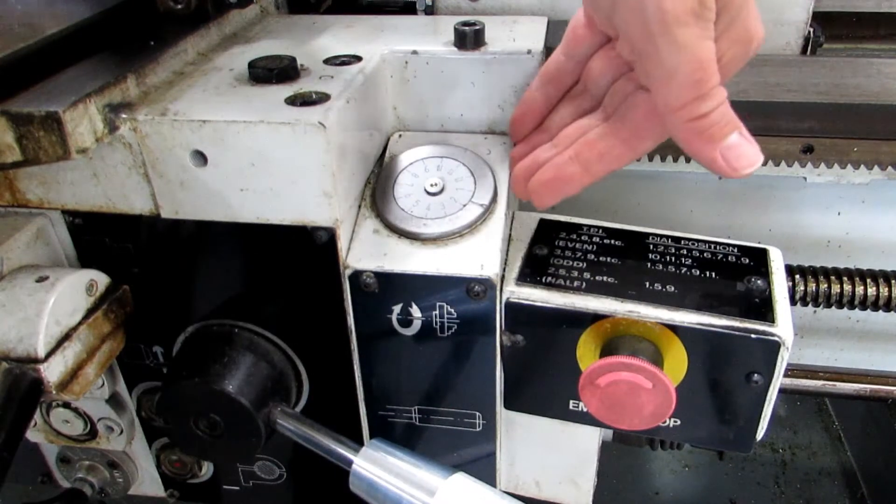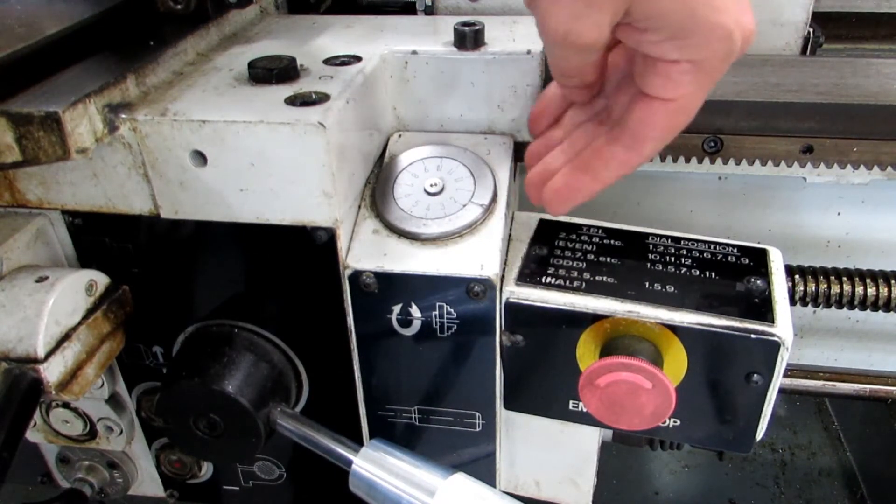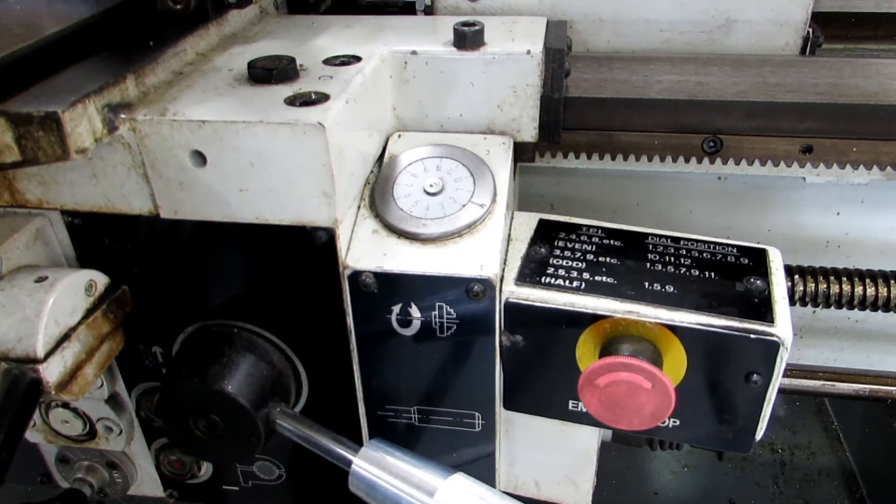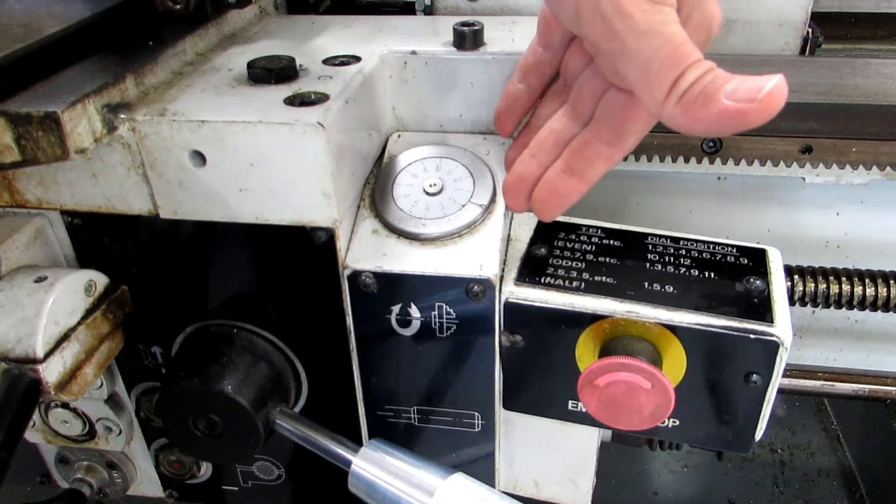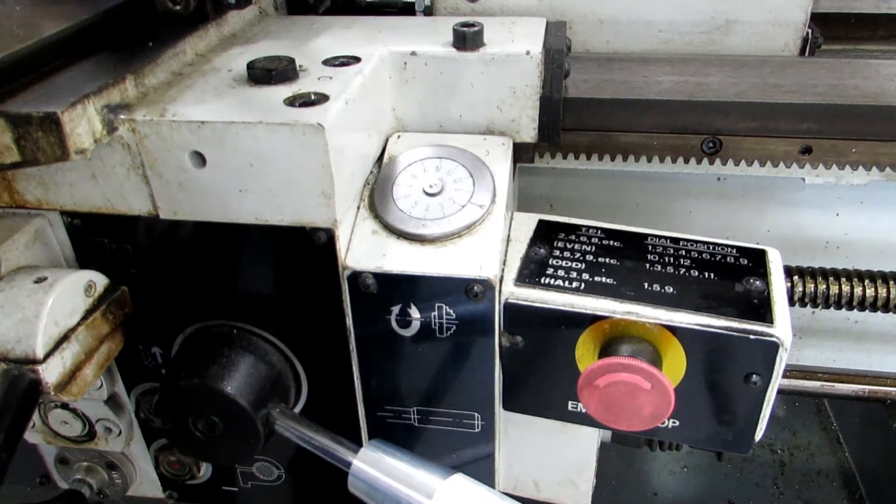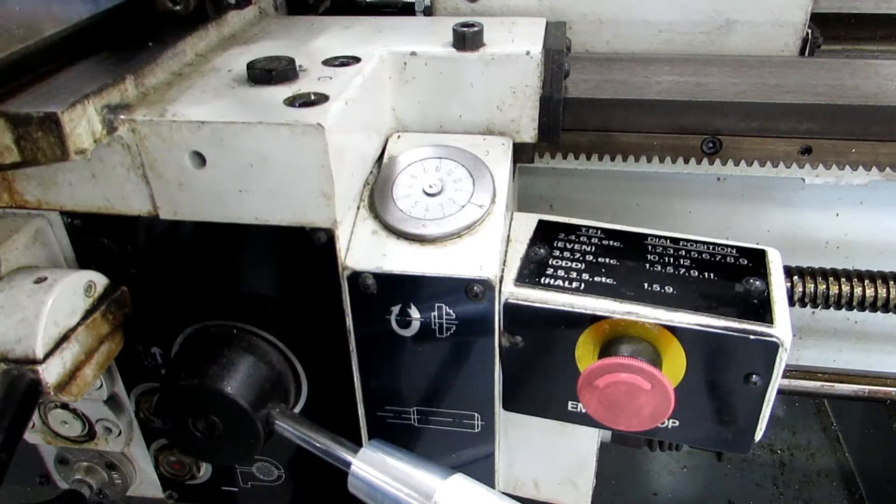So, this is the other location of the threading dial, and it's over here next to the half nuts, which actually makes it a little more convenient for you. So, this is on just one of the Clausing Metosa lathes, but if you're looking for it on the left-hand side and you don't see it, well, there it is by the e-stop.